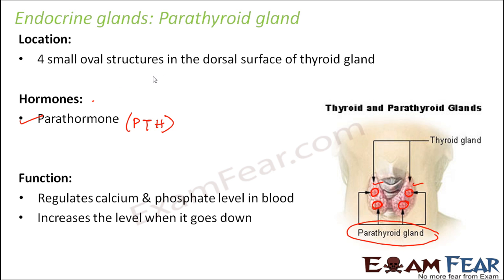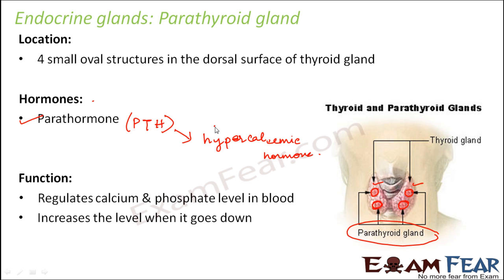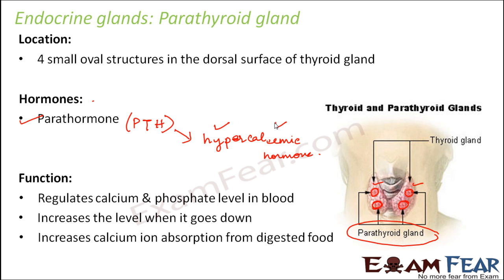Since parathormone increases the level of calcium in blood, it is also known as hypercalcemic hormone. Hyper means more, and calcium refers to the calcium it adds to the blood. It increases calcium ion absorption from digested food, and that is how it raises the calcium level in the blood.